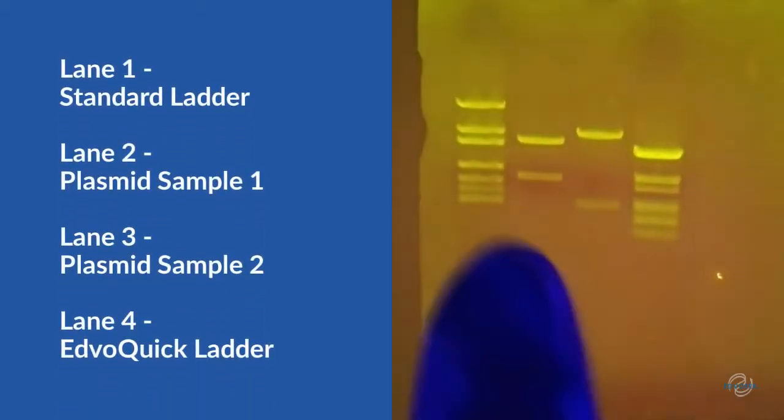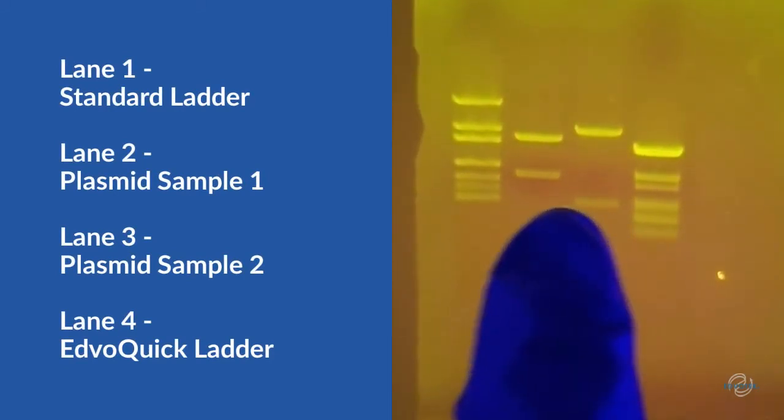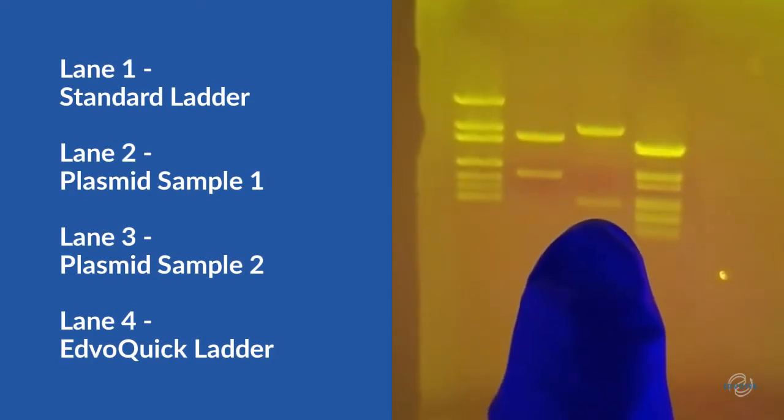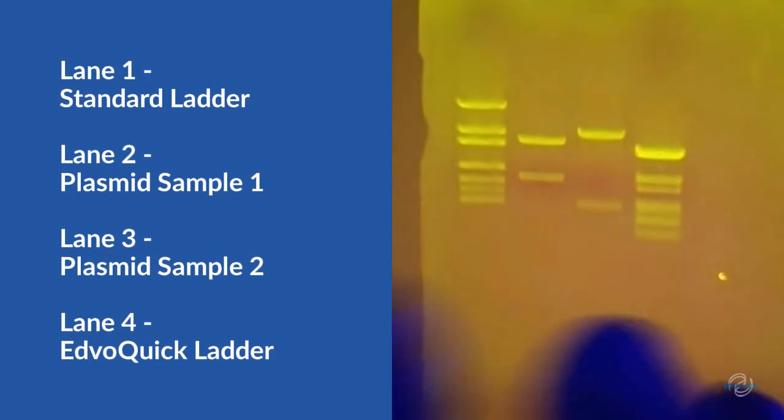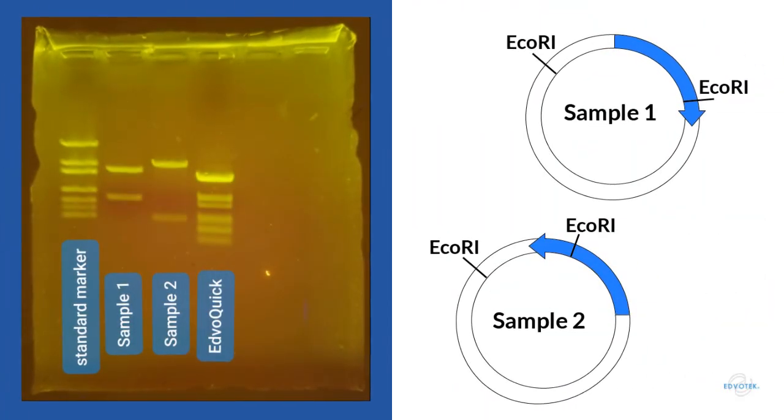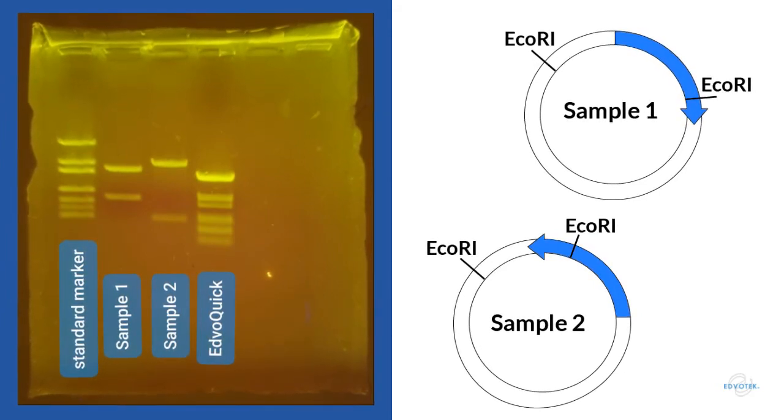Now, let's take a look at the lower bands. We can see that the lower band in sample one is just above the 1,100 band in the DNA ladder. In sample two, the lower band is below the 630 band in the DNA ladder. From this analysis, our results show that sample one has the insert in the correct orientation as related to the backbone.